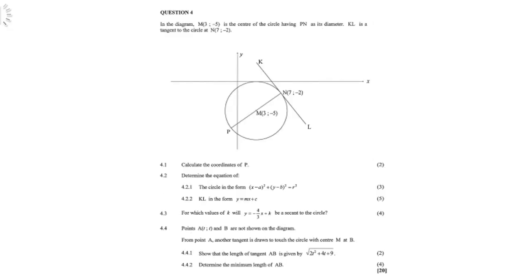Question 4 is still part of analytical geometry. This time it involves a circle. In the diagram, point M is (3, -5), the center of the circle having P and S diameter. KL is a tangent to the circle at the point N, which is (7, -2). Now you must calculate the coordinates of P.